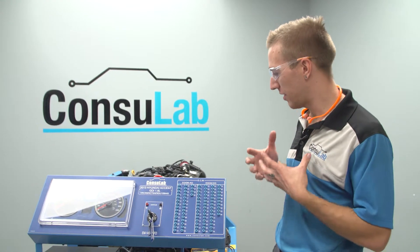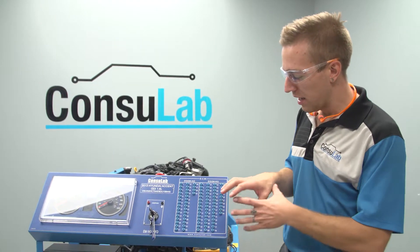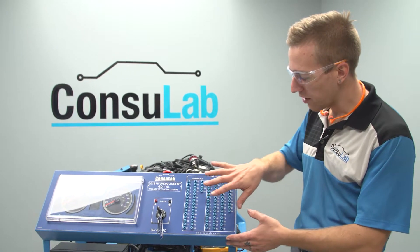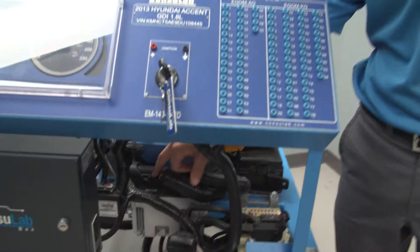It's one of the advantages of having an engine bench and it changes the way that you're going to teach. The breakout box has all of the pins, all the terminals, all the wires that go to the engine control module, which is located down here.